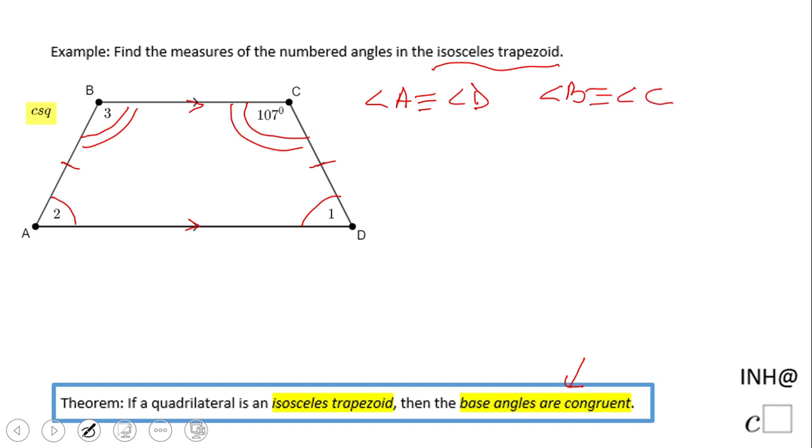So how can I use this to solve the problem? First, I'm going to say that the measure of angle B equals the measure of angle C. So the measure of angle B, which is angle 3, will be 107 degrees. That's it, very simple.